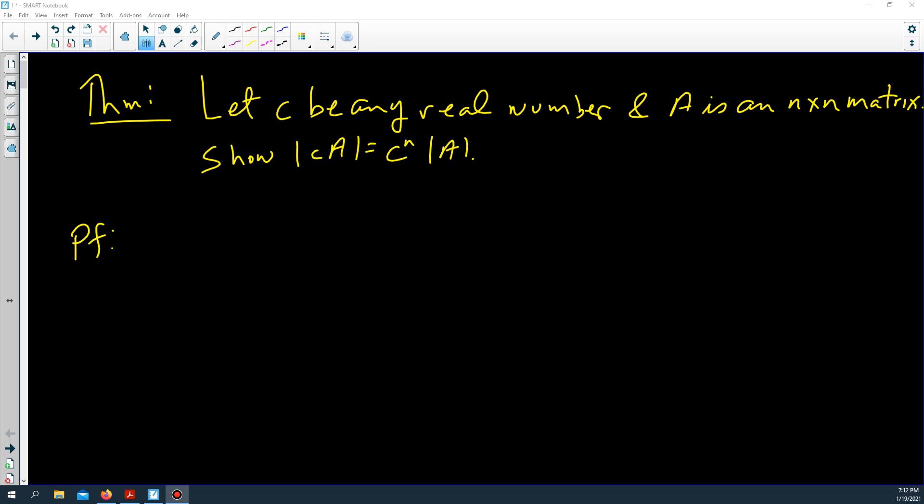In this video I'm going to prove that if A is any n by n matrix and c is any real number, if you multiply A by this scalar c, the determinant of cA will be c to the n times the determinant of A. And I want to do this by induction.